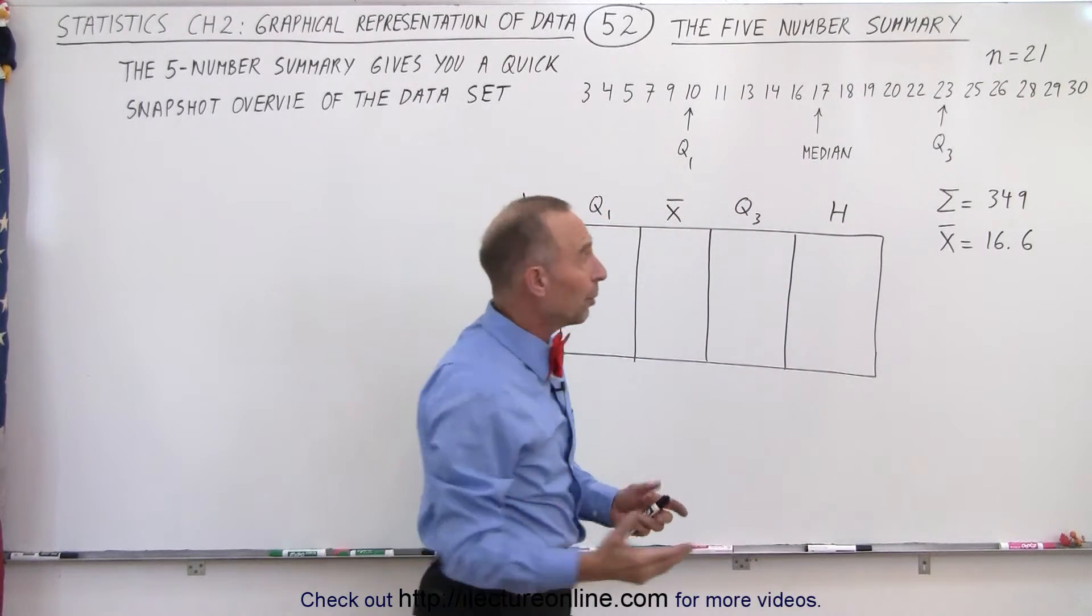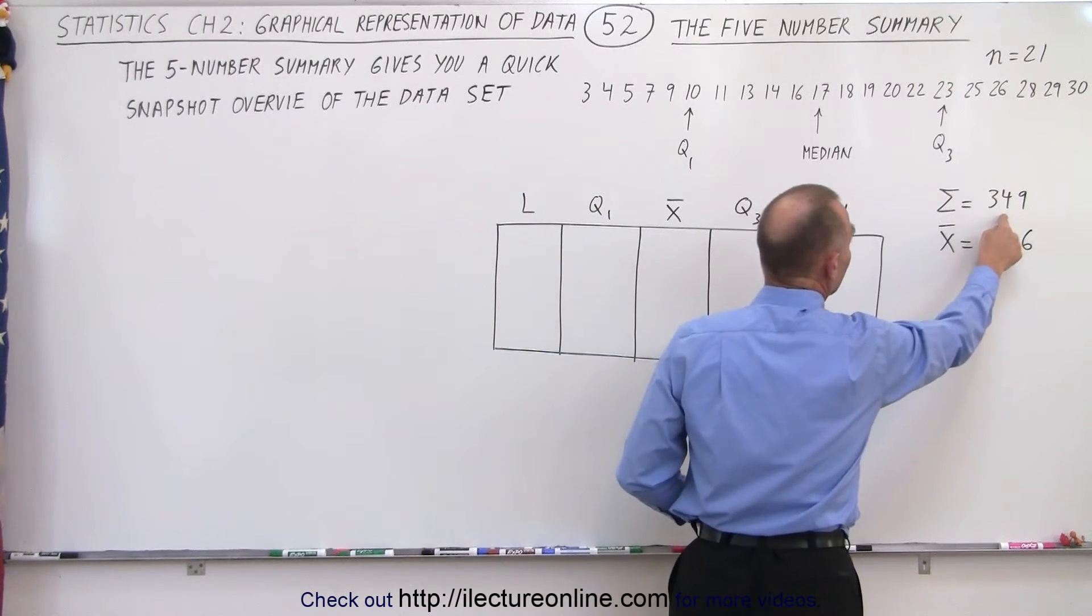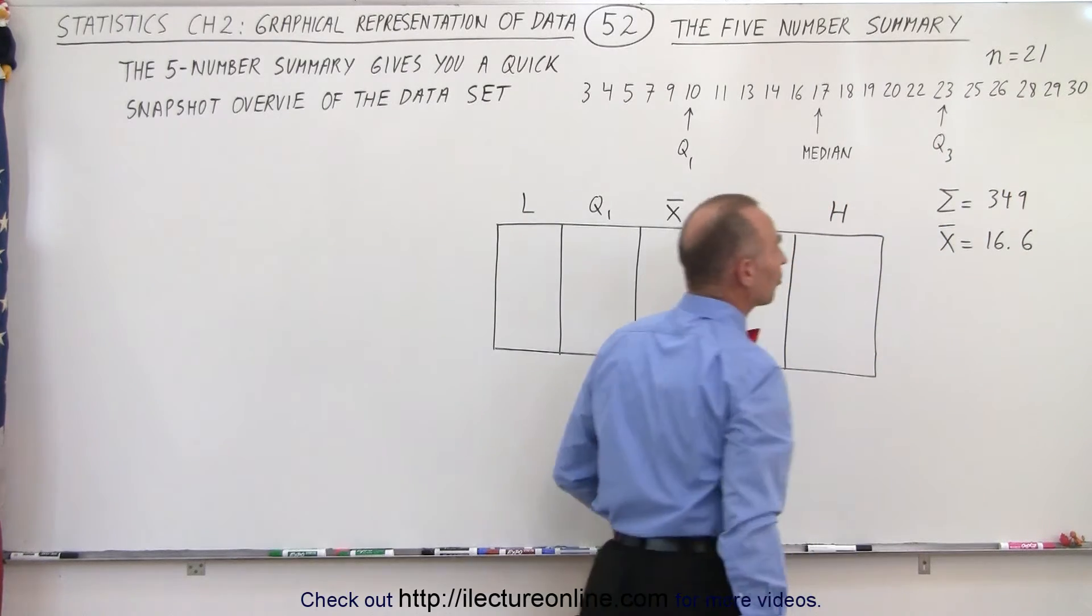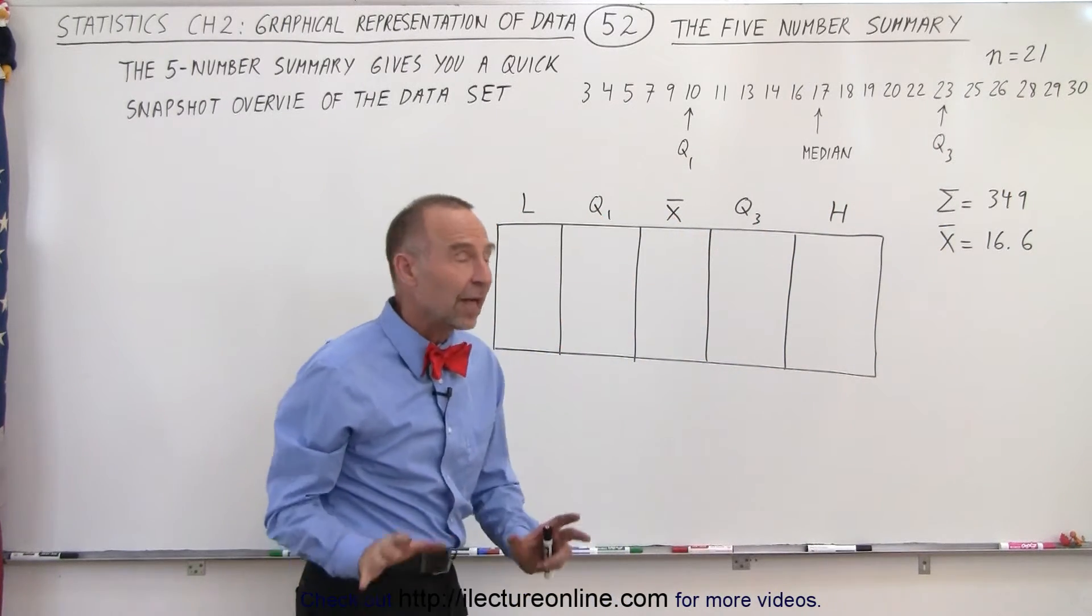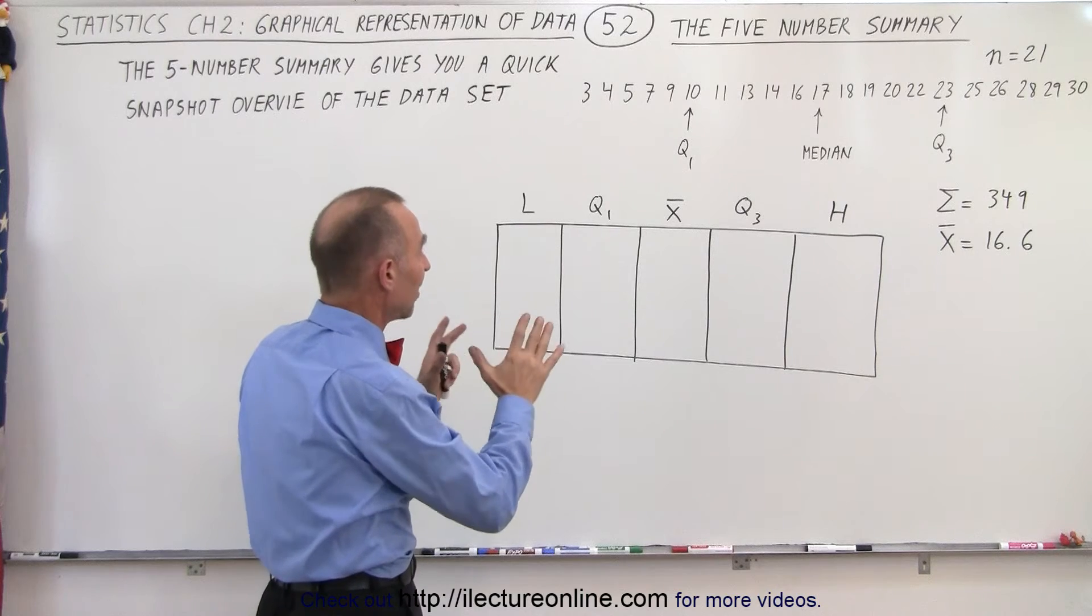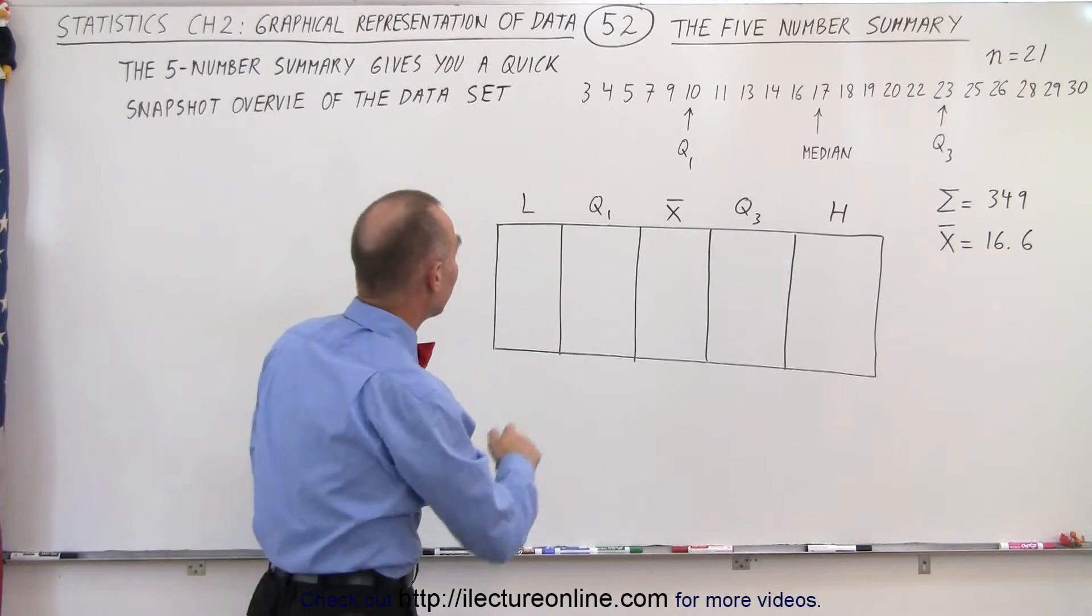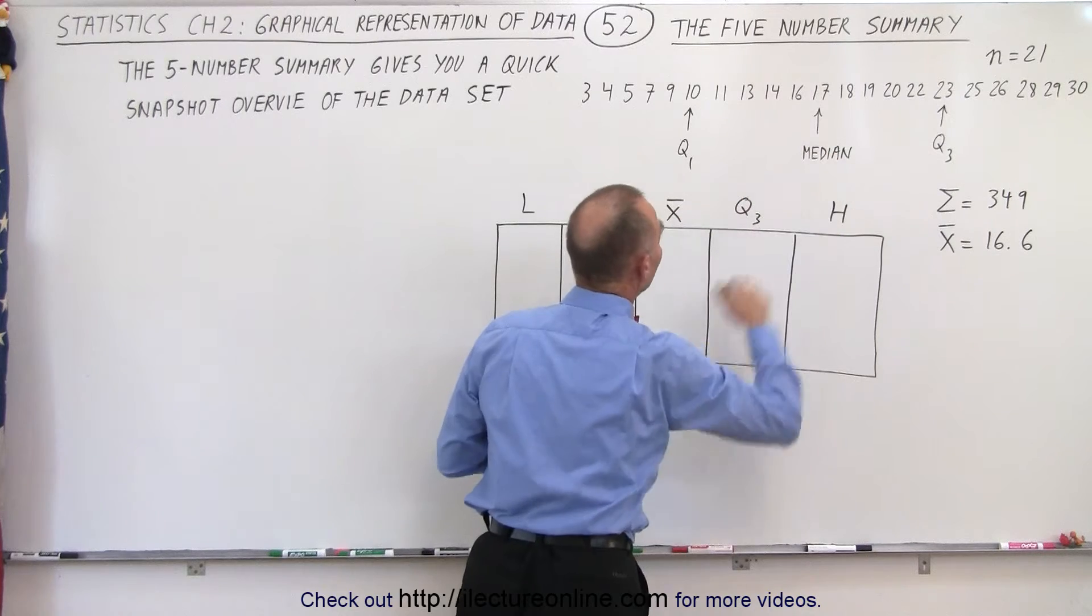If we sum up all the data points it adds up to 349. If we divide that by 21 we get the average of 16.6. Now the five numbers that make up the five number summary is the low value and the high value of the data set.